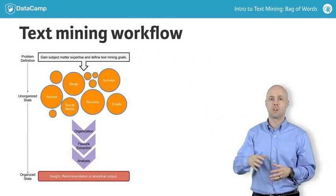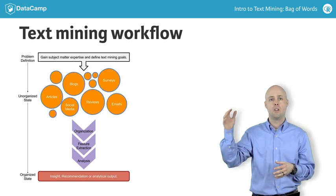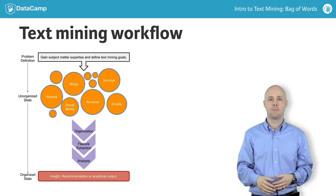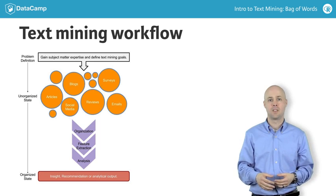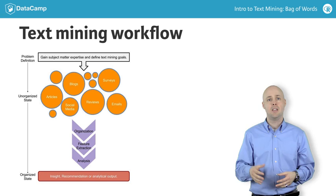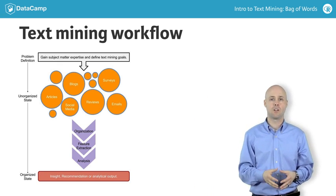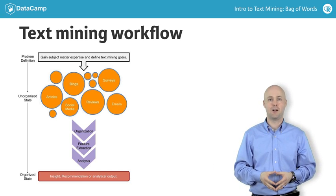This is a text mining workflow. After defining your problem statement, you transition from an unorganized state to an organized state, finally reaching an insight. In chapter 4, you will use this in a case study comparing Google and Amazon. The text mining workflow can be broken into six distinct components. Each step is important and helps ensure a smooth transition from the unorganized state to an organized state, keeping you on track for a meaningful output.